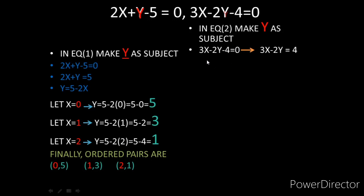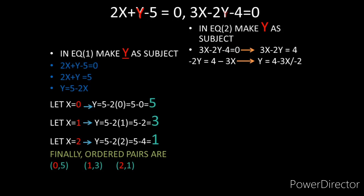Making y the subject in equation 2: transpose -4 to get 3x - 2y = 4, then transpose 3x to get -2y = 4 - 3x, then divide by -2: y = (4 - 3x) / (-2). Now we give values for x.